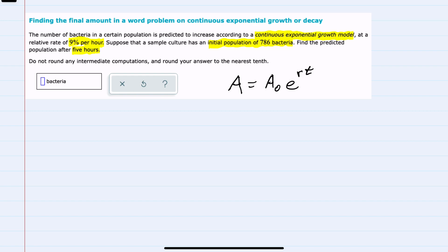Our equation for continuous exponential growth says that the final amount would be equal to the initial amount times e, which is our constant, raised to r, which is our rate per unit time, times time.